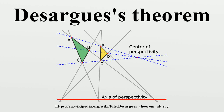In projective geometry, Desargues's theorem, named after Gerard Desargues, states: two triangles are in perspective axially if and only if they are in perspective centrally.